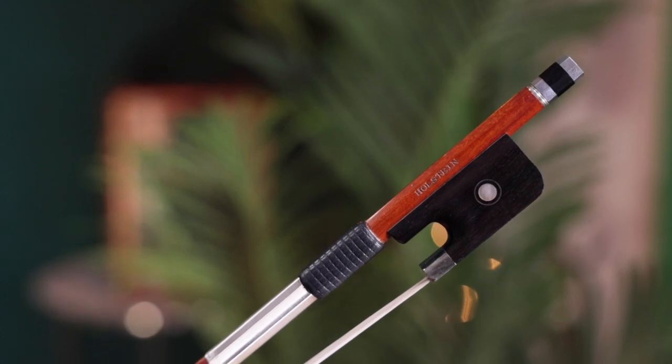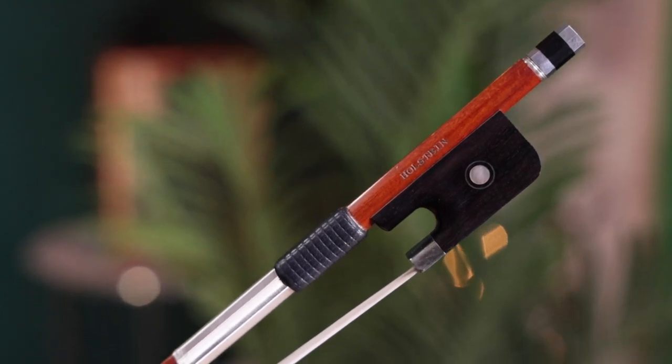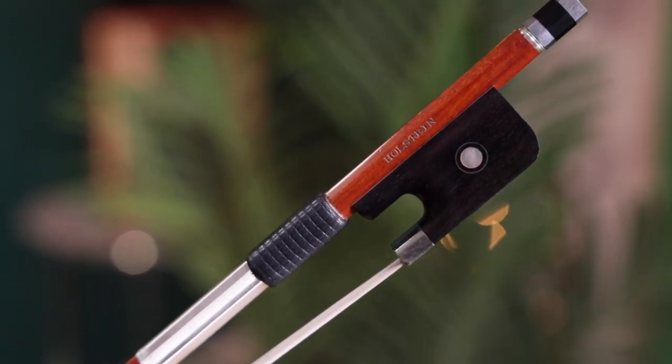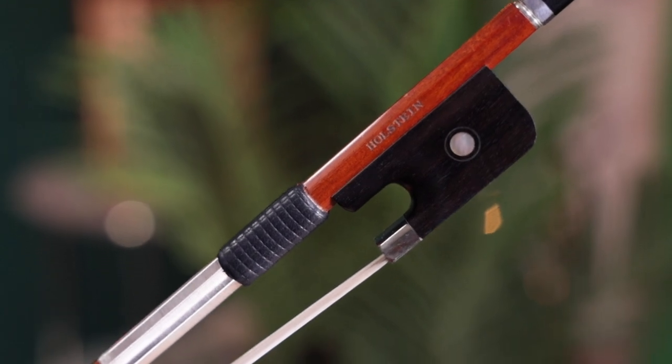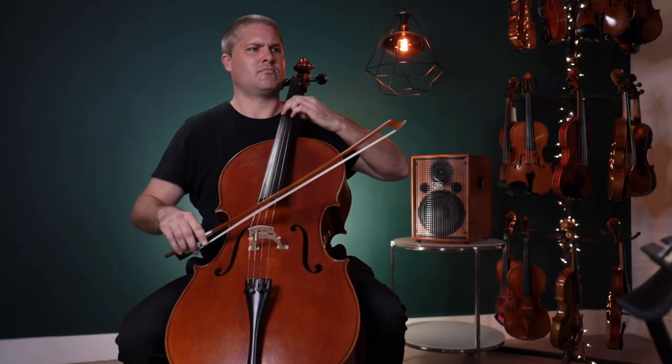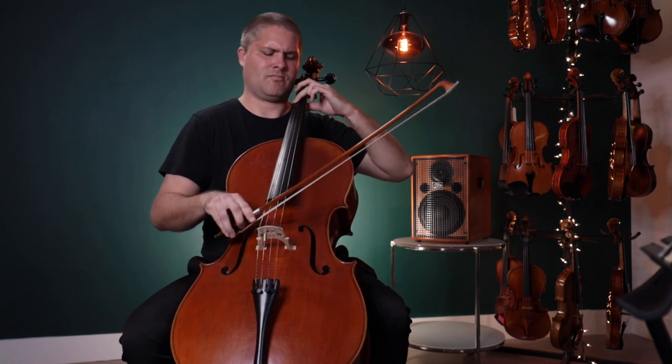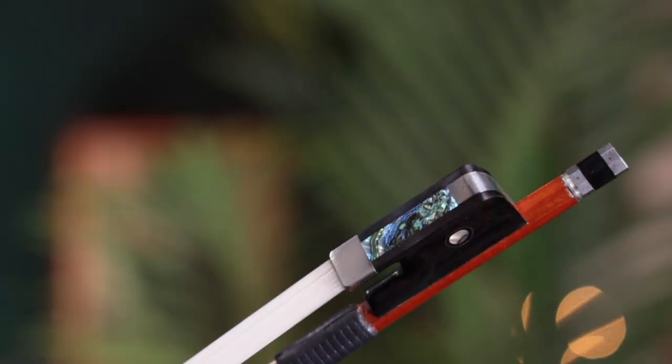The Holstein Pernambuco bow is the entry-level bow in this series. Pernambuco is the most sought-after wood type for players of all abilities and styles. The dense, lightweight, and springy nature of the wood creates an all-around enjoyable playing experience.